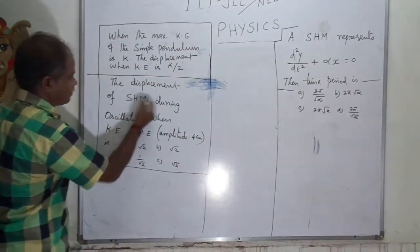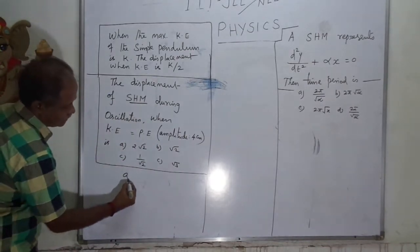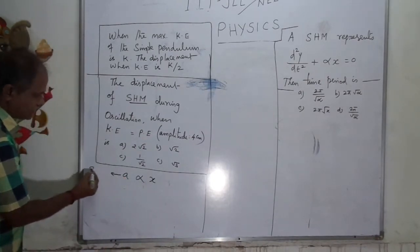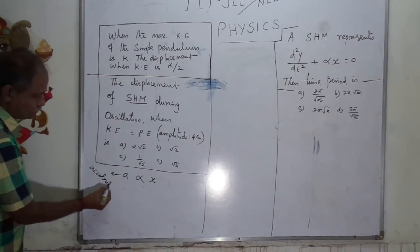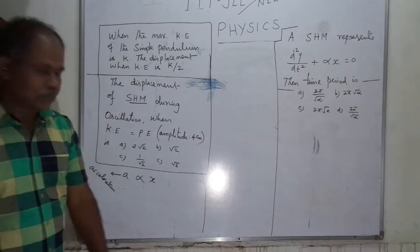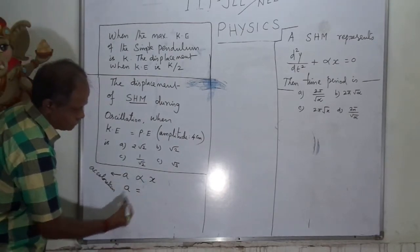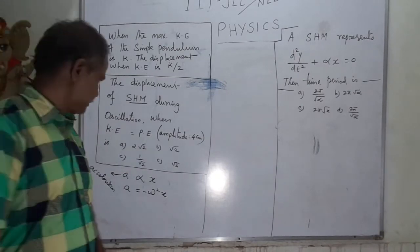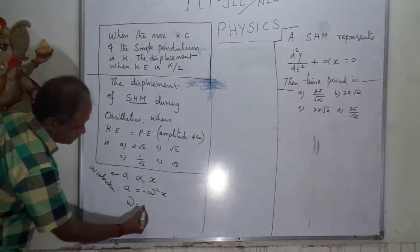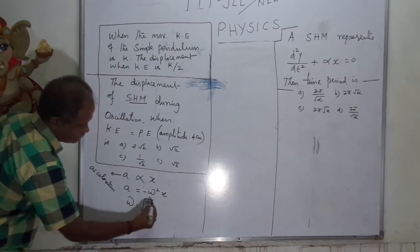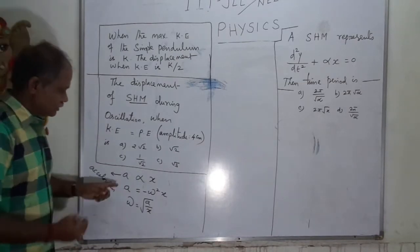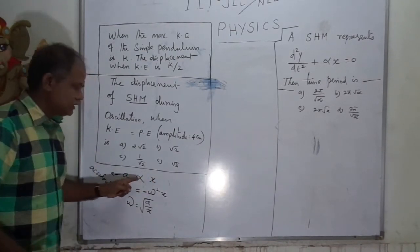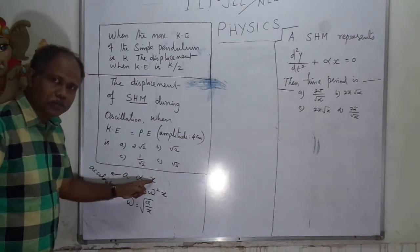Mathematically we can write that acceleration 'a' is directly proportional to displacement 'x'. Then putting in a constant, a is equal to minus omega squared x. Omega is equal to the square root of a by x. This is mathematically correct. If a body executes simple harmonic motion, acceleration is directly proportional to displacement.